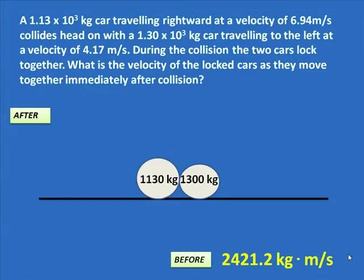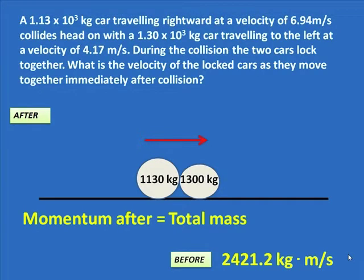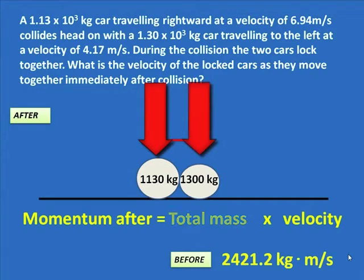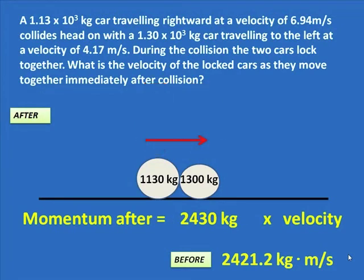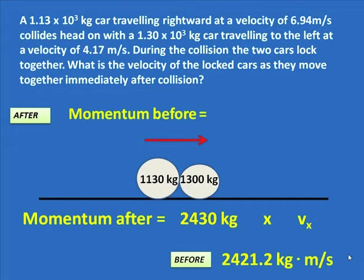Since the before was a positive number, the after will be a positive number — it will move to the right. The total momentum after the collision is the total mass times the velocity. They've joined together, so it's 1130 plus 1300, giving us 2430 kilograms times the unknown velocity. We also know the total momentum after the collision will equal the total momentum before the collision.